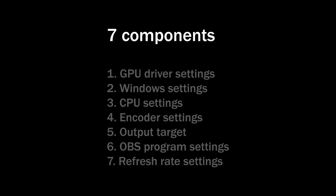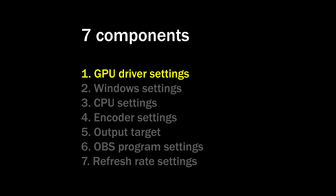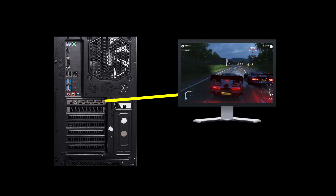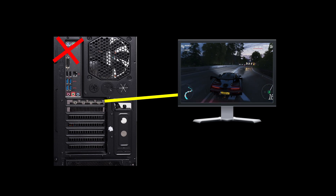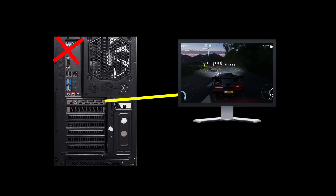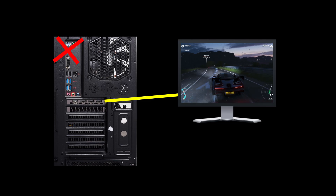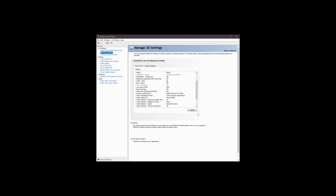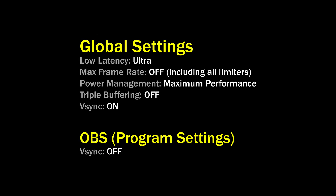Let's fix this one at a time. Number one is the GPU driver settings. Check that your main monitor used for playing the game is connected to the GPU slot on the bottom part of the back of your PC, not to the top part where it connects to the onboard graphics. If it was in the wrong slot, move it to the bottom slot, then restart your computer. After that, open up your Nvidia control panel and change your global settings just like this. If you have an AMD graphics card, search for the equivalent settings and change those accordingly.